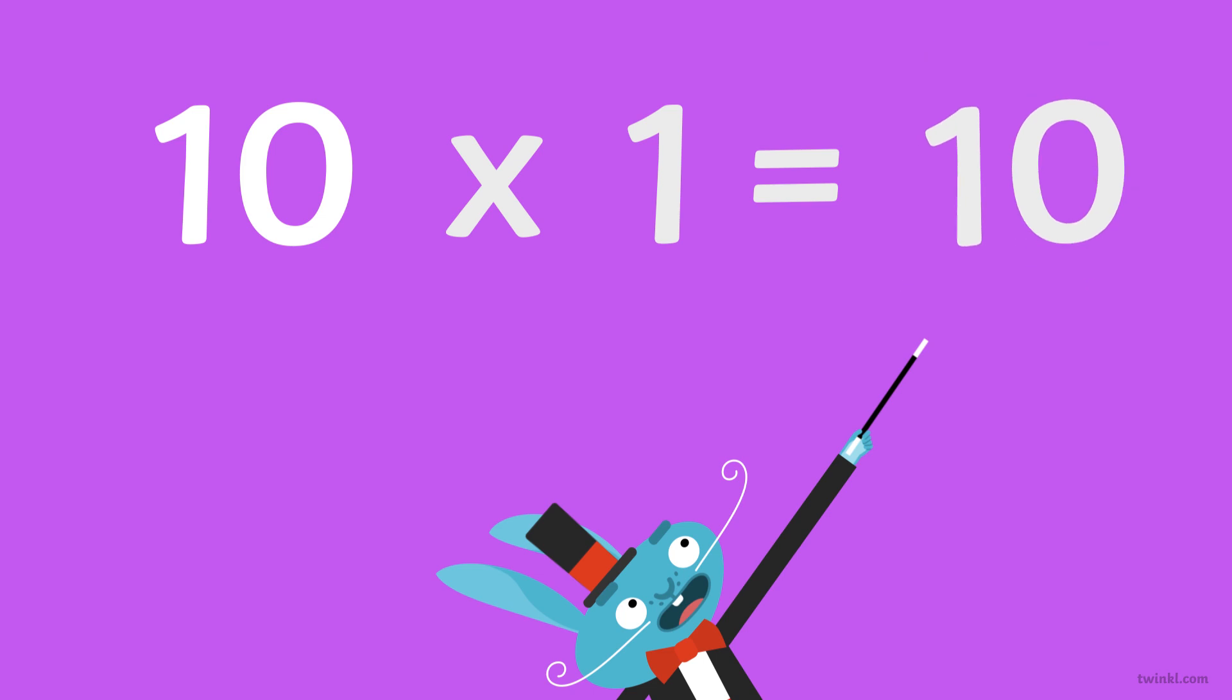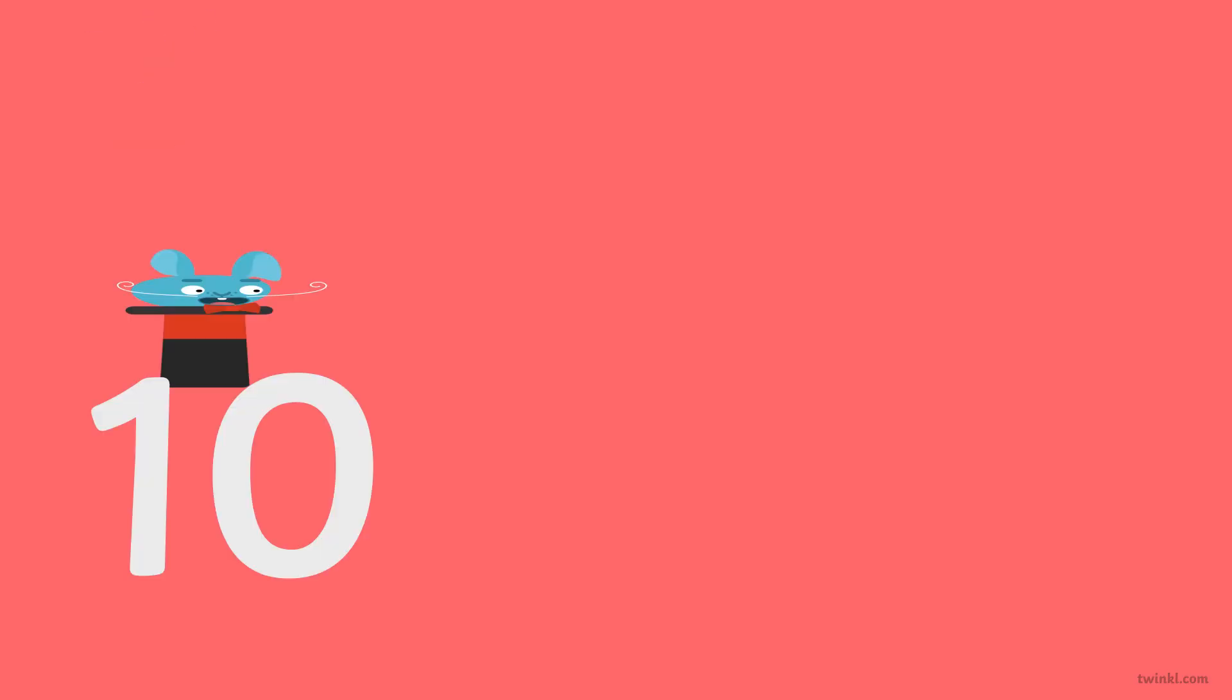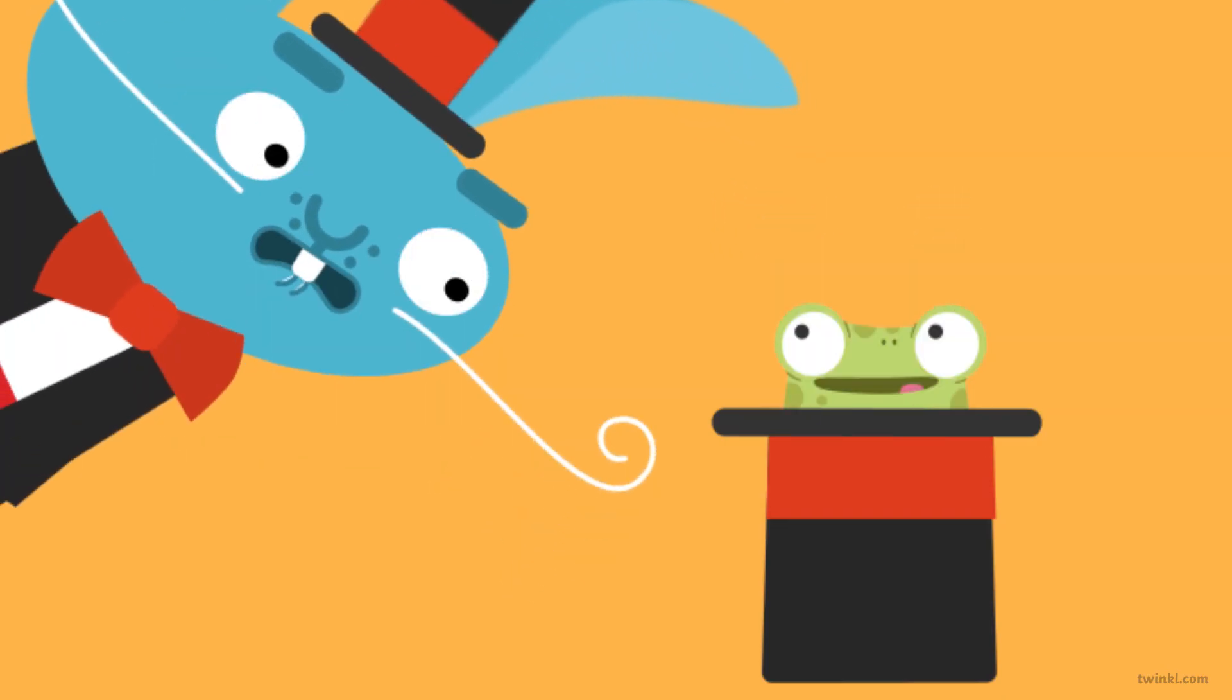Ten times one is ten, ten times two is twenty, ten times three is thirty. Watch out for the hat trick.